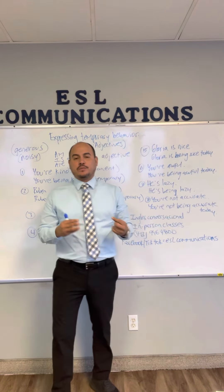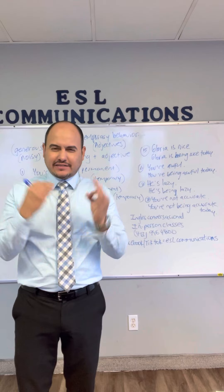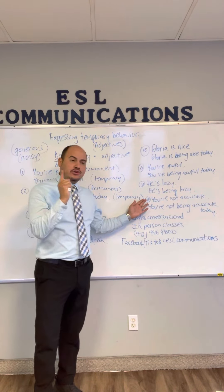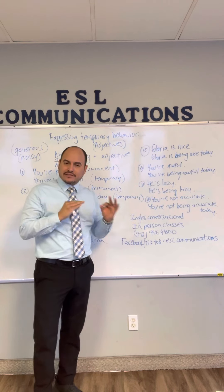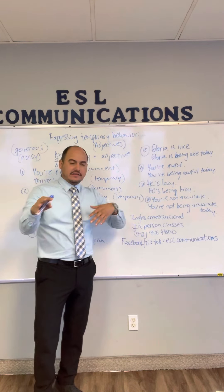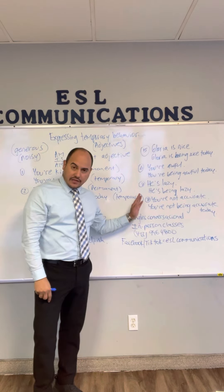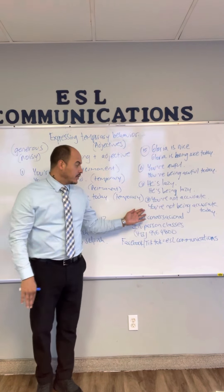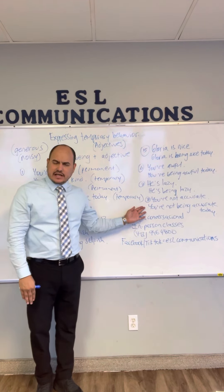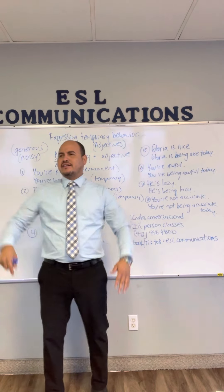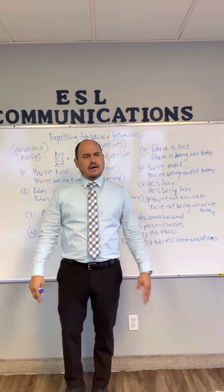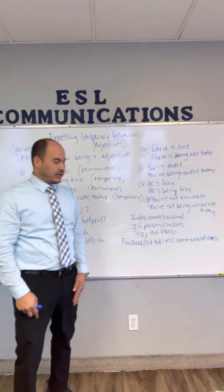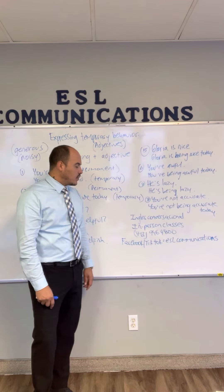Number eight: 'accurate' — algo preciso, exacto. Negative permanent example: 'You're not accurate' — no eres preciso, te confundes. Temporary: 'You're not being accurate today' — imagínate que alguien te está dando números en el trabajo, hoy no andas preciso, no estás haciendo las cosas precisas.